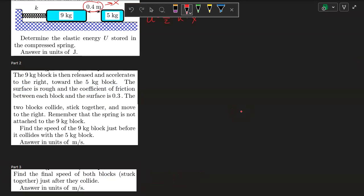Part 2. The 9 kilogram block is then released and accelerates to the right towards the 5 kilogram block. The surface is rough, and the coefficient of friction between each block and the surface is 0.3. The two blocks collide, stick together, and move to the right. Remember that the spring is not attached to the 9 kilogram block. Find the speed of the 9 kilogram block just before it collides with the 5 kilogram block. Answer in units of meters per second.